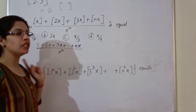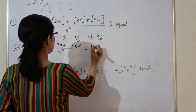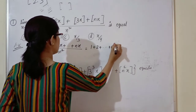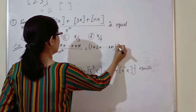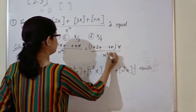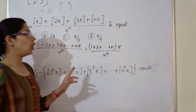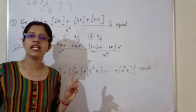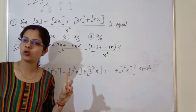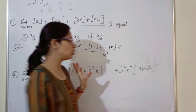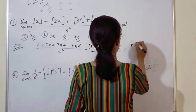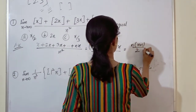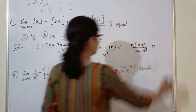In the numerator, I can take x common to get 1 plus 2 plus 3 up to n, multiplied by x, divided by n square. Now 1 plus 2 plus 3 up to n is the sum of n natural numbers, which equals n into n plus 1 by 2.